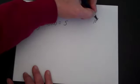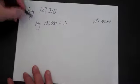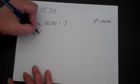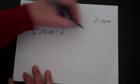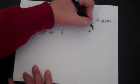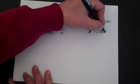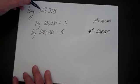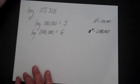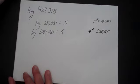Why? Because 10 to the fifth is one with five zeros. And log of 1,000,000 is equal to six because 10 to the sixth is equal to one million. So it gives you really a sense of scale. Log of 127,000, I know it's between five and six. For that matter, if it was log of 427,000, I would also know it's between five and six.